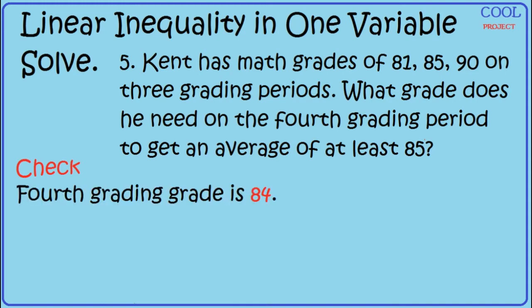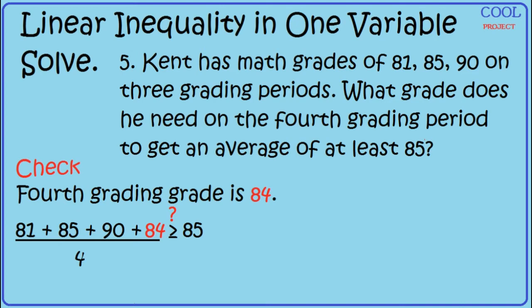The 4th grading grade needed is 84. Substitute 84 for x: (81 plus 85 plus 90 plus 84) divided by 4 is greater than or equal to 85. This gives 340 over 4, which equals 85, which is greater than or equal to 85. True.